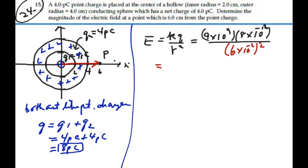Six times ten to the minus two squared. So we figure this out. Nine times ten to the nine times eight times ten to the minus twelve divided by six times ten to the minus two squared is twenty.